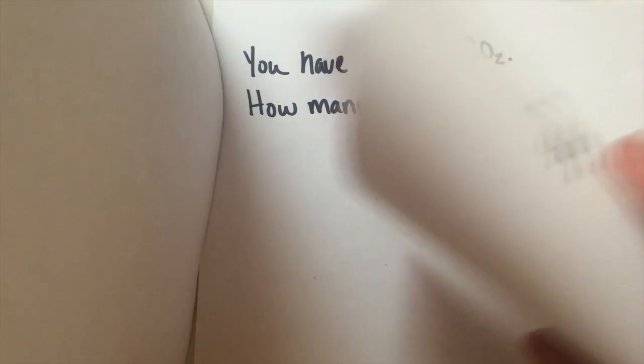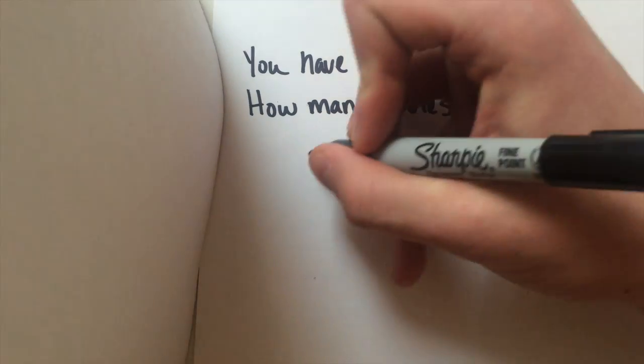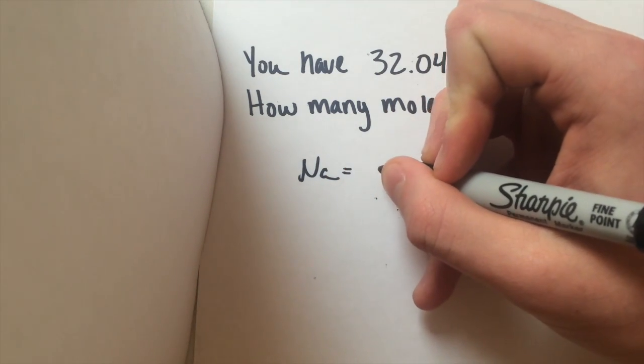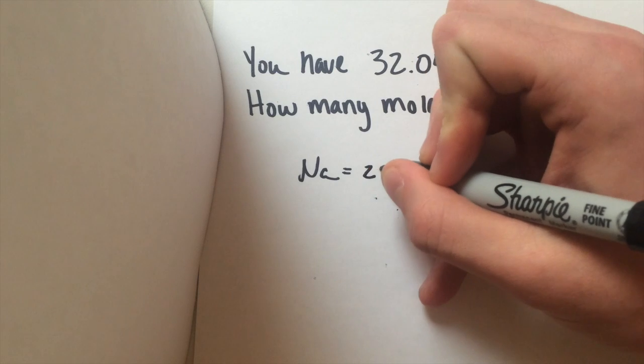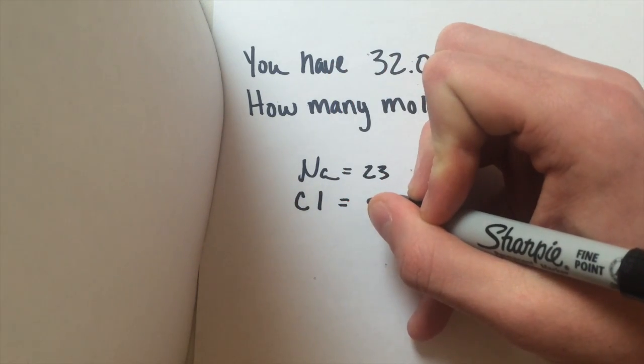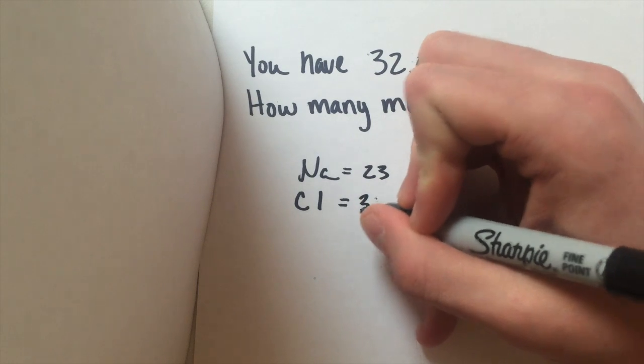Now let's take a look at our next problem. So first, let's find the molecular weight of sodium chloride. Looking at the periodic table, we see that sodium has a weight of 23, and chloride has a weight of 35.5.